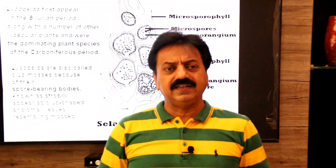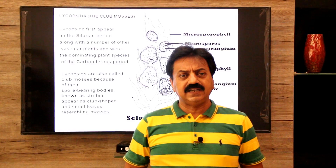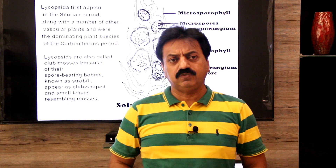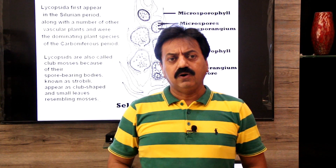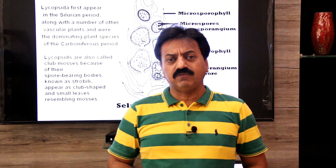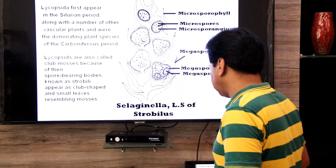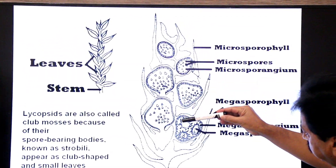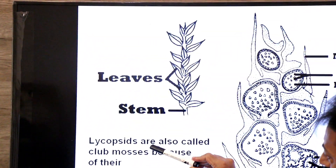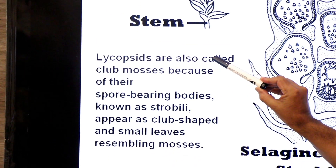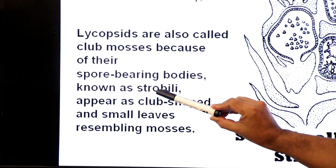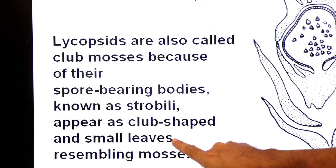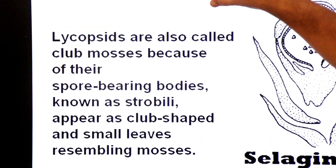Their reproductive organ, the strobilus, is club-shaped and spores are produced from it. Selaginella is a heterosporous plant. The leaves of club mosses resemble mosses. Here you can see the club-shaped strobilus and the leaves. Lycopsida are also called club mosses because of their strobilus and small leaves resembling mosses.